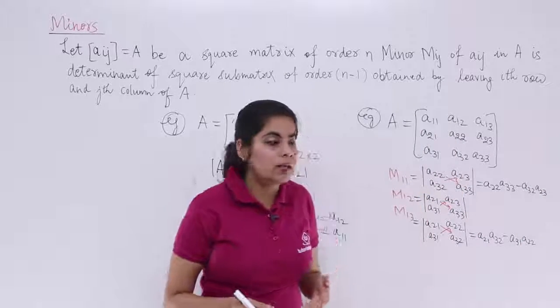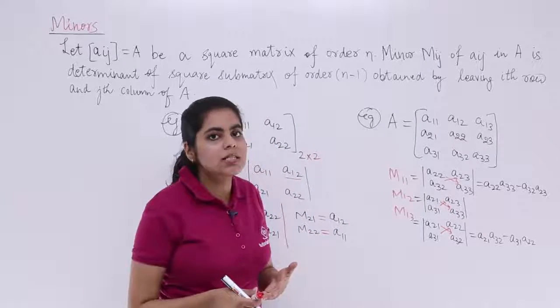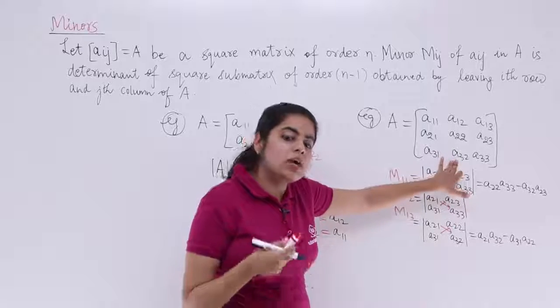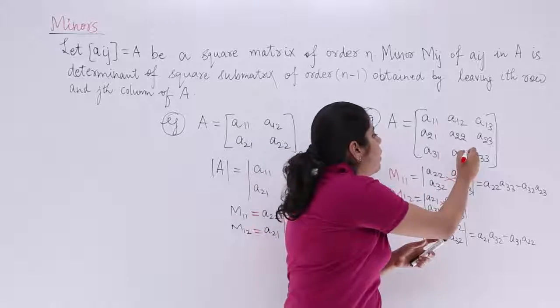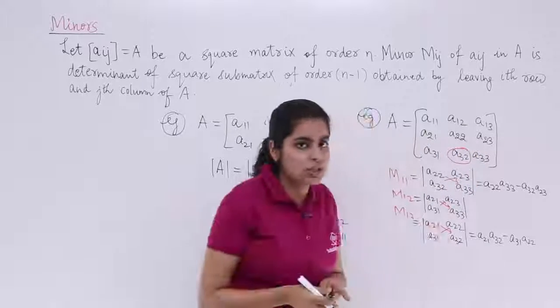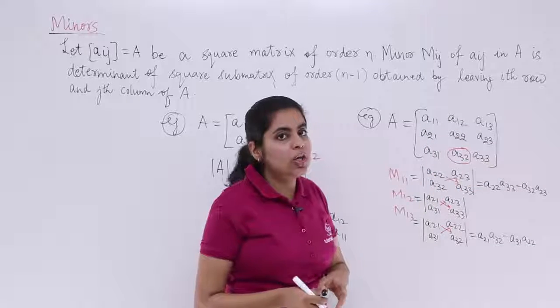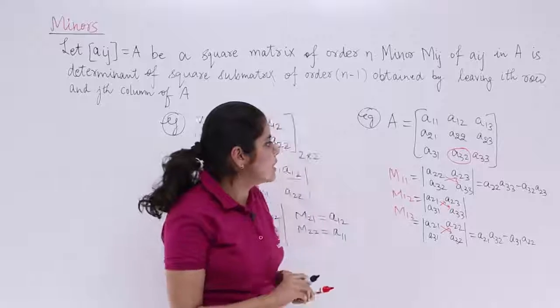So in this manner, as we have solved for these three minors, if somebody asks you the value of minors, say M32. So again, the same technique you need to follow. So M32's minor would be what? You have to take into consideration this. Leave the third row. Leave the second column. Solve the sub-determinant that is left. I take one example of this kind.